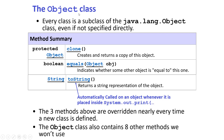Let me tell you about a very interesting class called the Object class. This Object class is the ultimate parent class in Java — every class that you write is derived from this ultimate parent. You might wonder where this class is defined. It belongs to the java.lang package. So you can say java.lang.Object if you want to be specific.